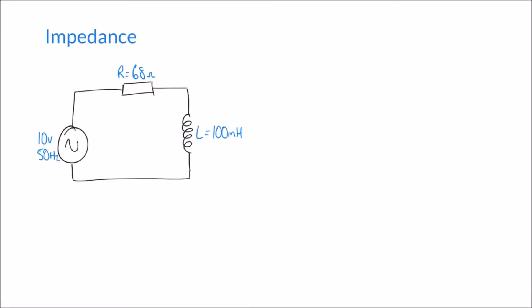In our previous video we looked at how we can calculate reactance in simple AC circuits — for example, the inductor in this circuit is going to have a reactance. We've also looked at the concept of resistance and how resistors behave in simple circuits. In this video we're going to look at the topic of impedance, which we can think of as the combination of resistance and reactance. But first, let's quickly remind ourselves of reactance and how we can calculate it.